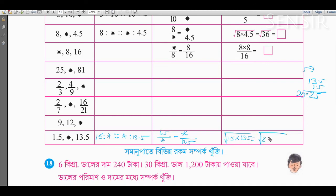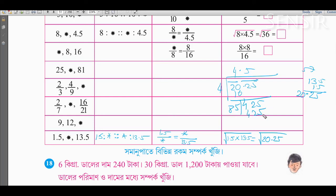Square root of 20.25. Now let's take a look: 4, 4, 6. So 4, 25. 4, 2, 8. This is 10. And this is 5: 4, 4, 5, 2, 8, 5, 4, 5. So it's easy.